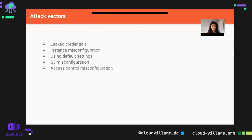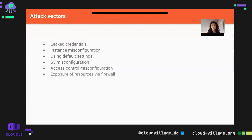Access control misconfiguration — if you don't properly define that a particular user should have only a limited level of access, you end up giving more privilege than that user is supposed to have. That can lead to external attack vectors as well as internal threats. Exposure of resources via misconfigured firewall gives any user over the internet access to your resources — that's most dangerous.